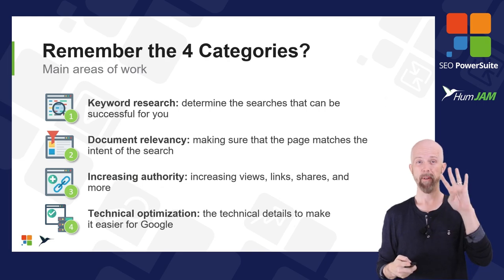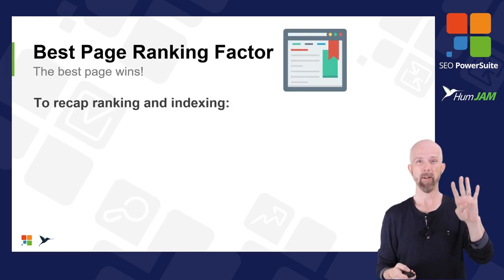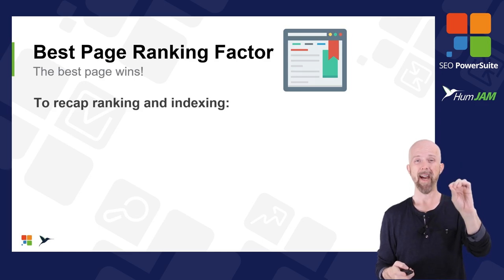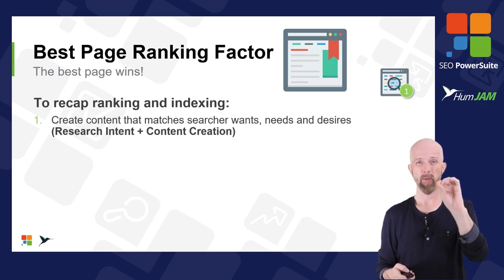The primary SEO question we always ask is: what are my searchers typing into Google right now that I have resources for and can target right now? Remember those four categories: keyword, document, increasing authority, and technical optimization.